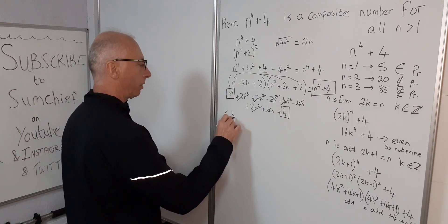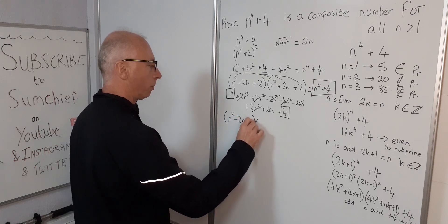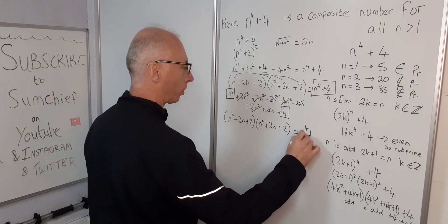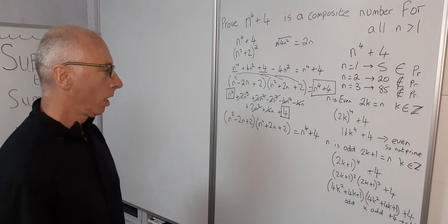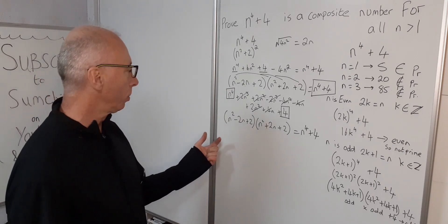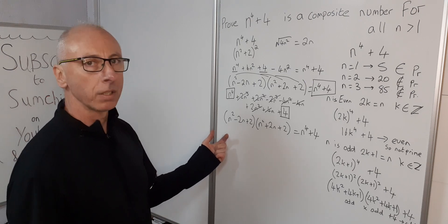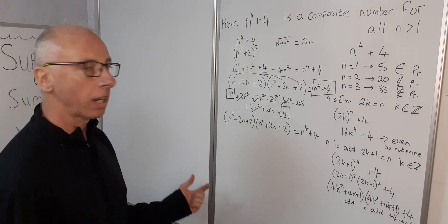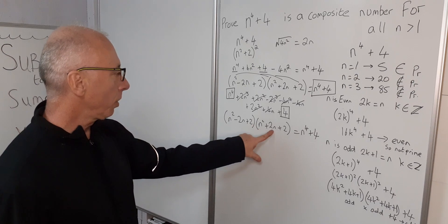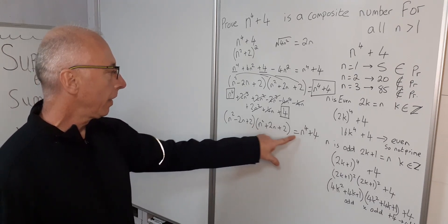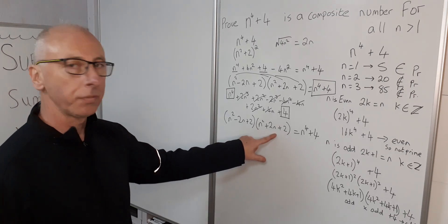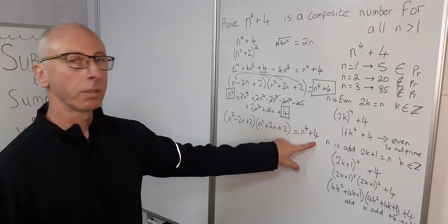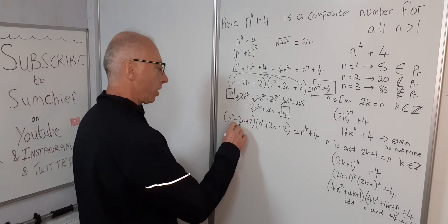So we've shown that n squared minus 2n plus 2, multiplied by n squared plus 2n plus 2, equals n to the 4 plus 4. By the fundamental rule of arithmetic, any composite number has two distinct factors other than 1 and itself. These two factors yield different values and both multiply to give n to the 4 plus 4, so by the fundamental theorem of arithmetic, this always yields a composite number.